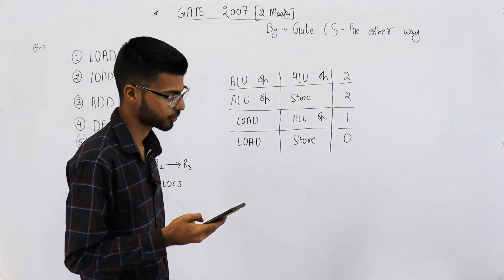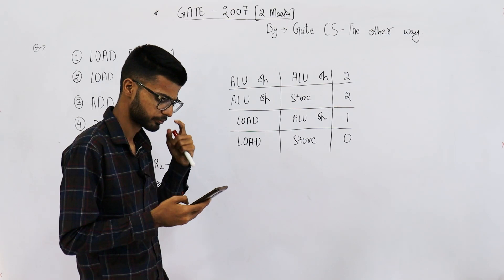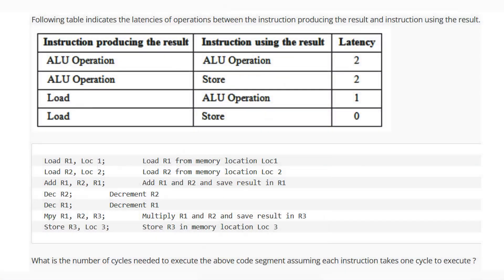Welcome back. This question is from the GATE 2007 exam for two marks. The following table indicates latencies of operations between the instruction producing the result and the instruction using the result. You are given a table and some code, and they're asking: what is the number of cycles needed to execute the above code segment?